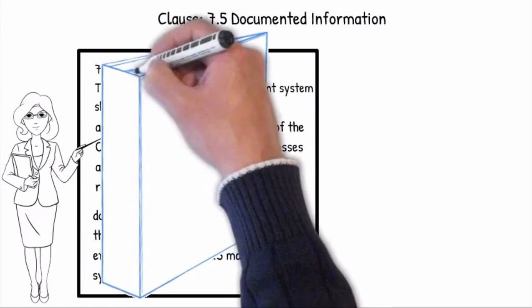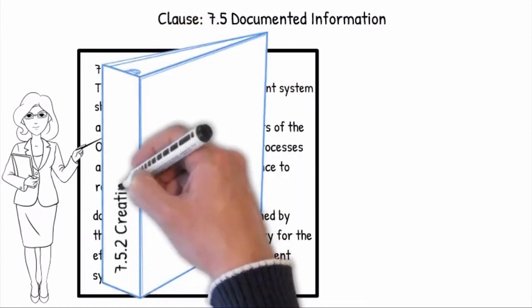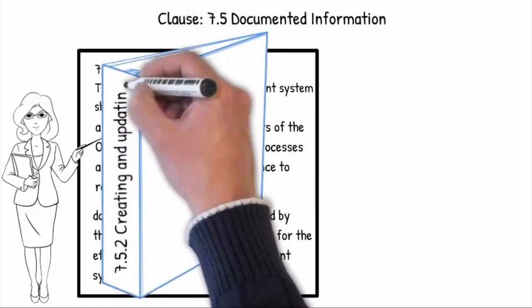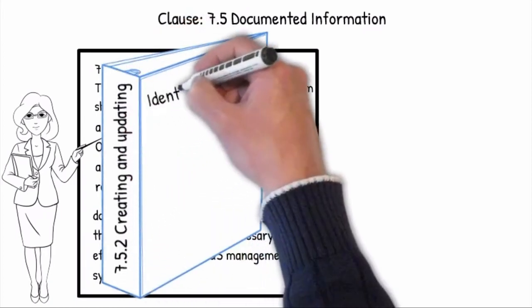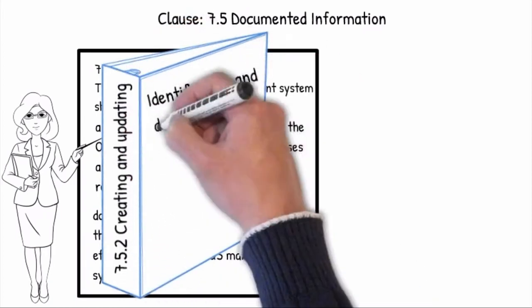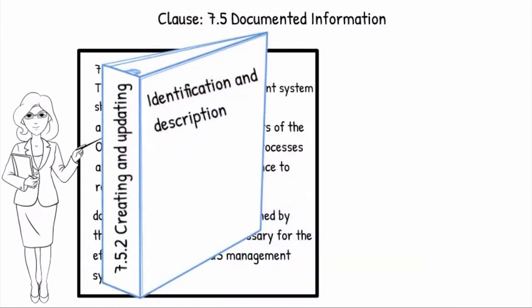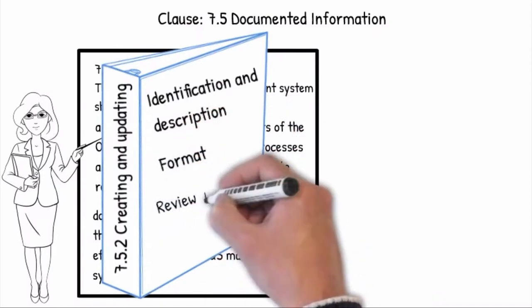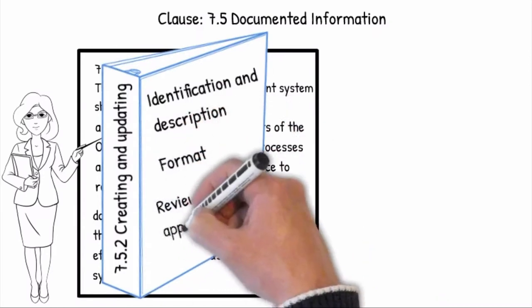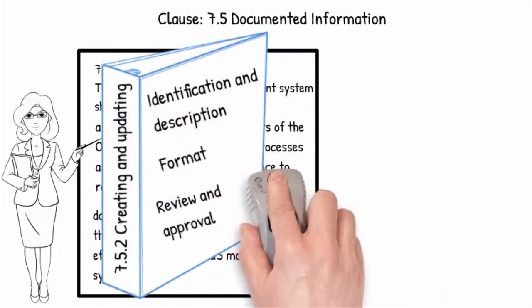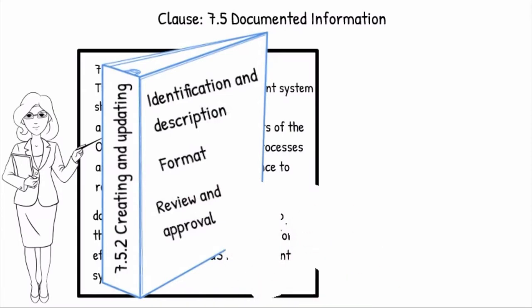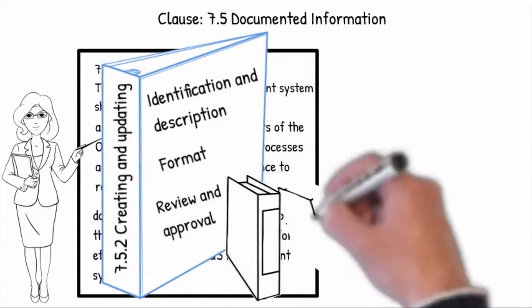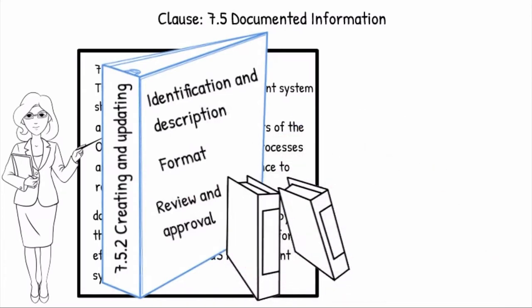Clause 7.5.2 Creating and Updating: The organization must identify the process by which OHS system documentation will be described, identified and controlled, and updates will be reviewed and approved before they are released.